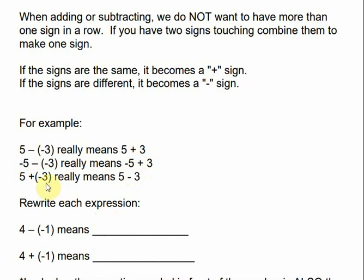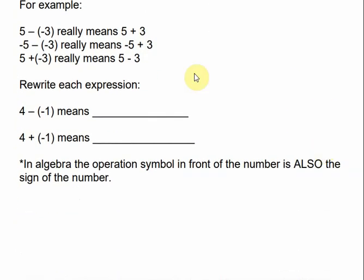5 plus negative 3 — this time the signs are different, a plus and a minus, so that becomes minus. So if we want to rewrite each of these expressions, when we see two signs touching, we change them to one sign. If they're the same, that becomes 4 plus 1. If they're different, that becomes 4 minus 1.